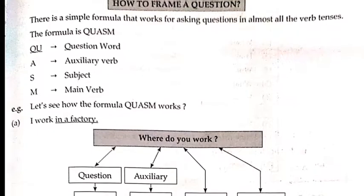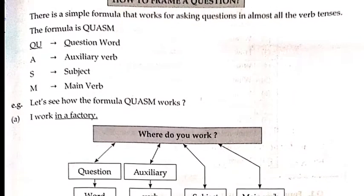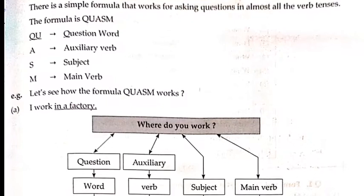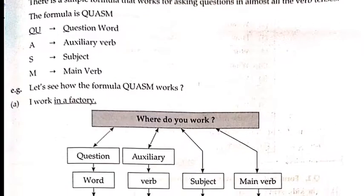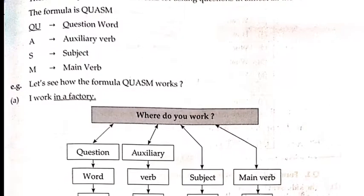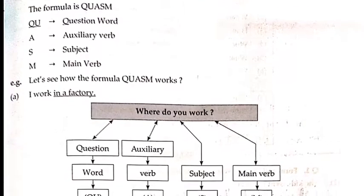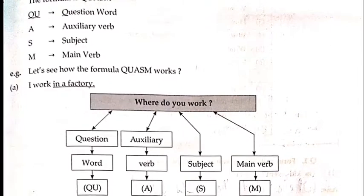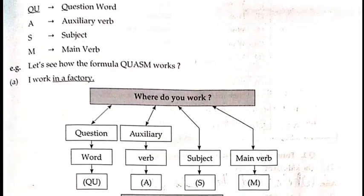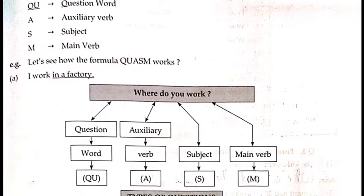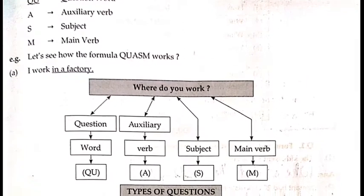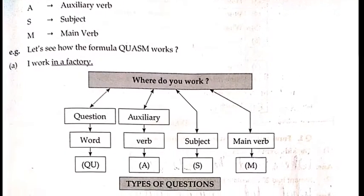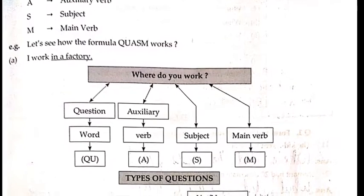How to frame a question? There is a simple formula that works for asking questions in almost all verb tenses. The formula is Q-U-A-S-M. Q-U means question word, A means auxiliary verb, S means subject, M means main verb. Let us see how the formula Q-A-S-M works. Example: 'I work in a factory.' becomes 'Where do you work?' — Question Word, Auxiliary verb, Subject, Main verb.